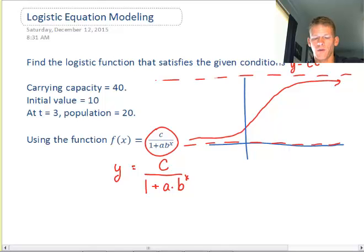and one point on the graph. The carrying capacity they gave us is 40, so that could be if it's a population, it could be 40 people or 40,000 people, but it's 40. Our initial value at time equals 0 has a coordinate 0 comma 10, and then we have another value for the population at time equals 3, we're at 20.